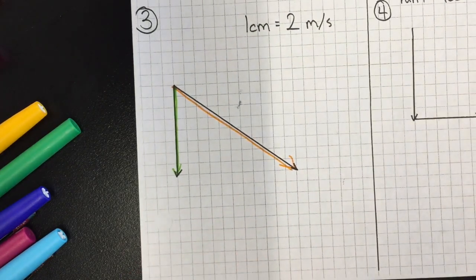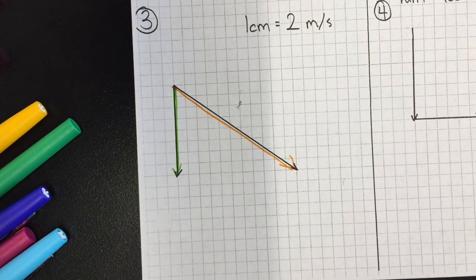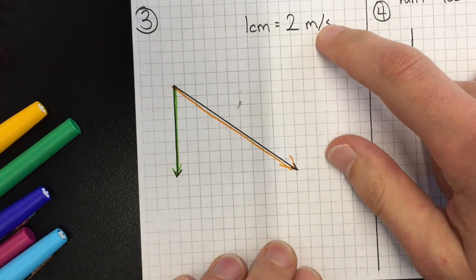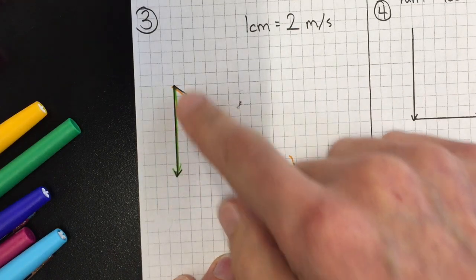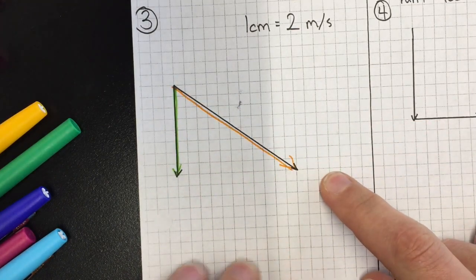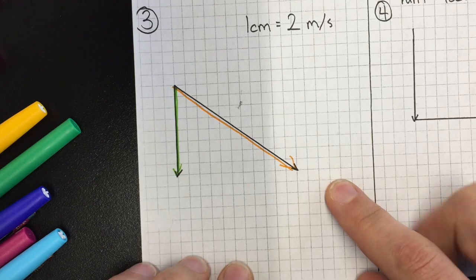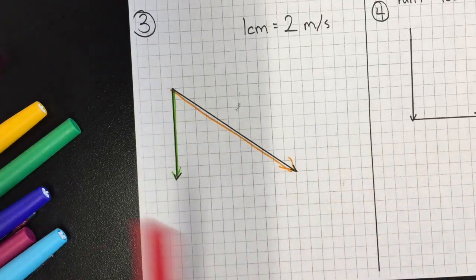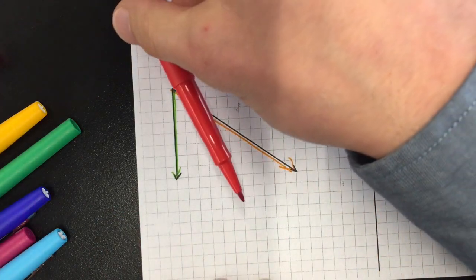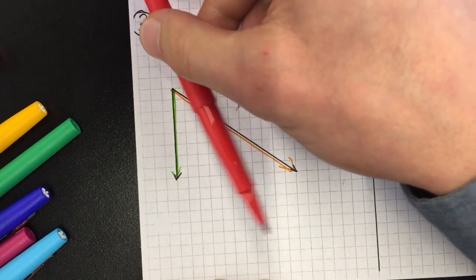Now first thing we have to think about just intuitively, since this says meters per second, if something is being moved downward and it's moving downward into the right, then we realize that the resultant better be pointed downward and maybe a little bit right as well.